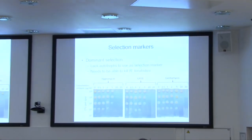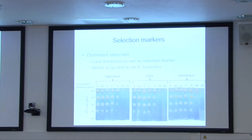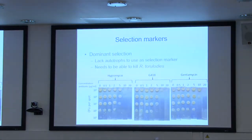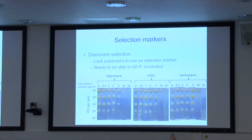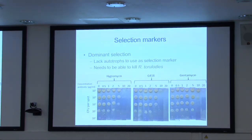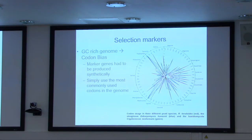The first thing we had to do was check that these antibiotics can kill Rhodosporidium toruloides. We did a quick kill curve, and we see that Rhodosporidium is all dead at concentrations of 10 or 20 micrograms per ml in the case of both antibiotics.